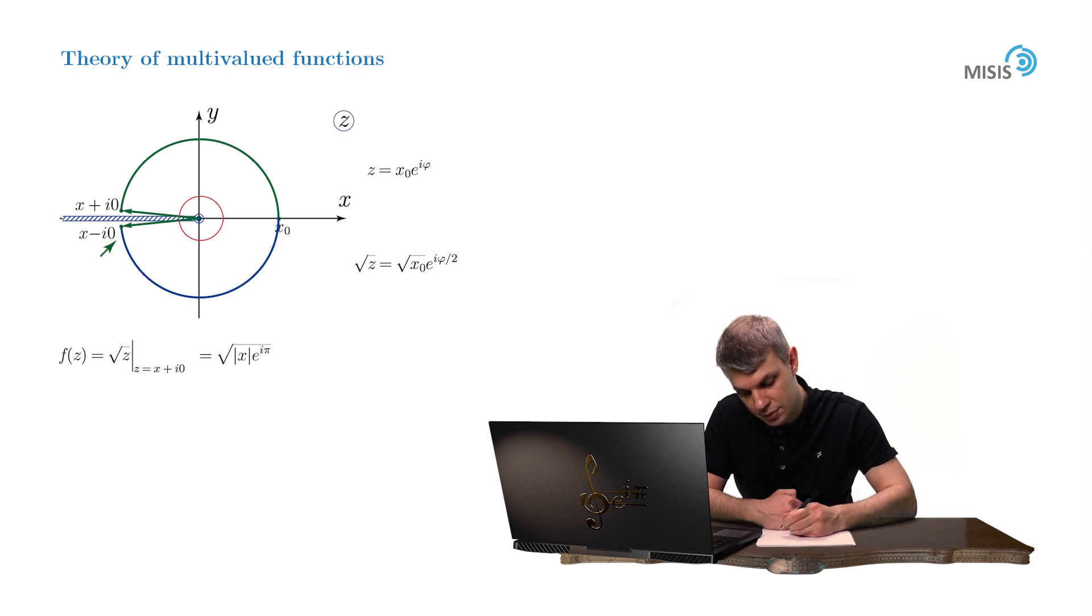This way we see that f(x + i0) is now equal to the square root of x times e^(iπ), which yields square root of x times e^(iπ/2).